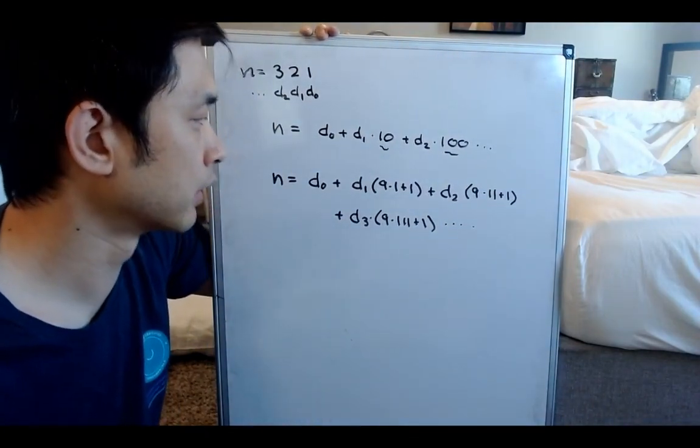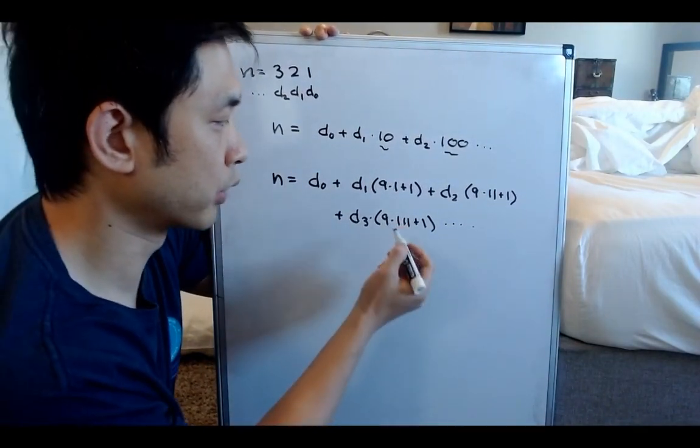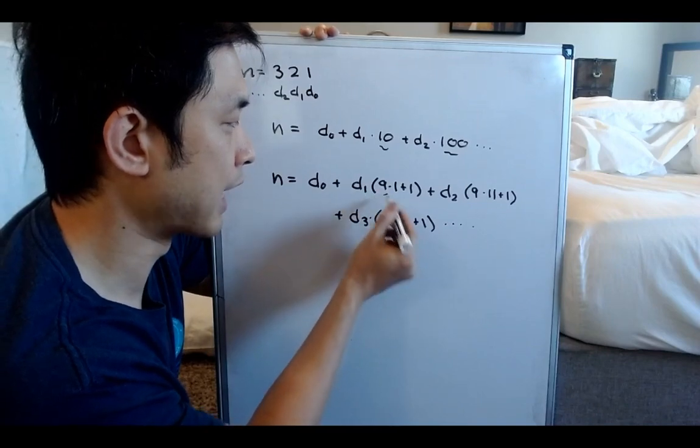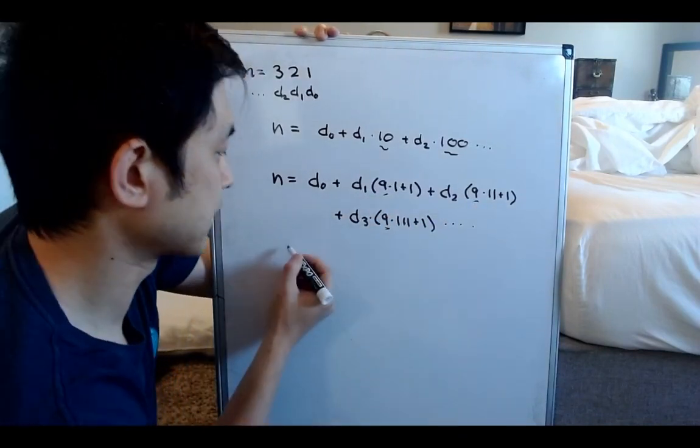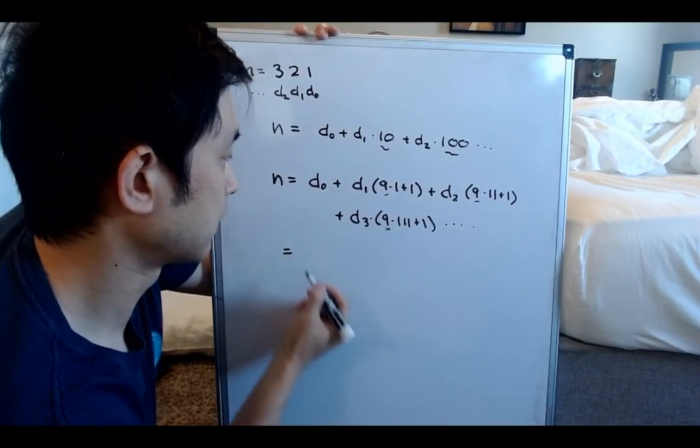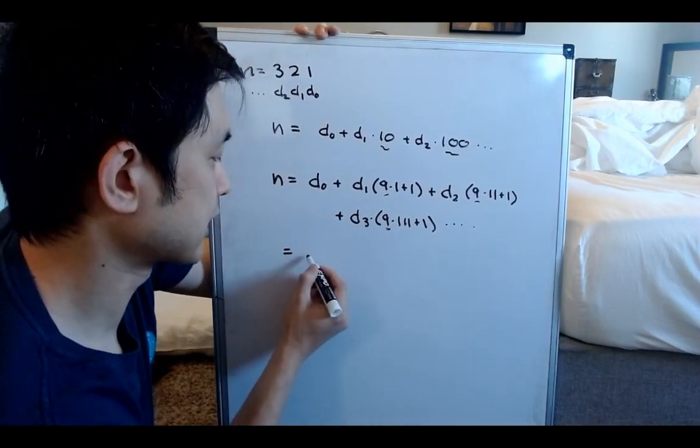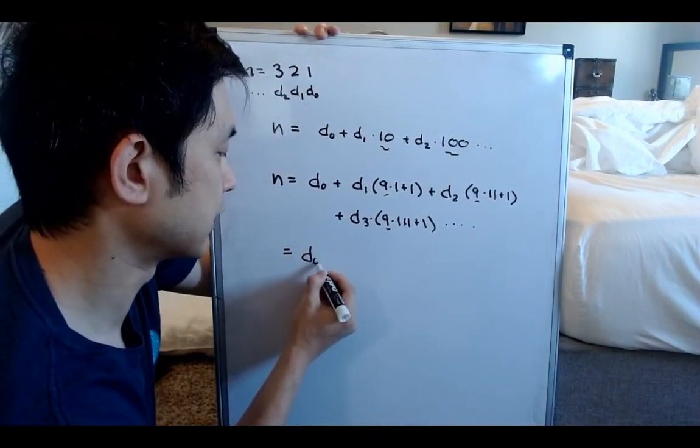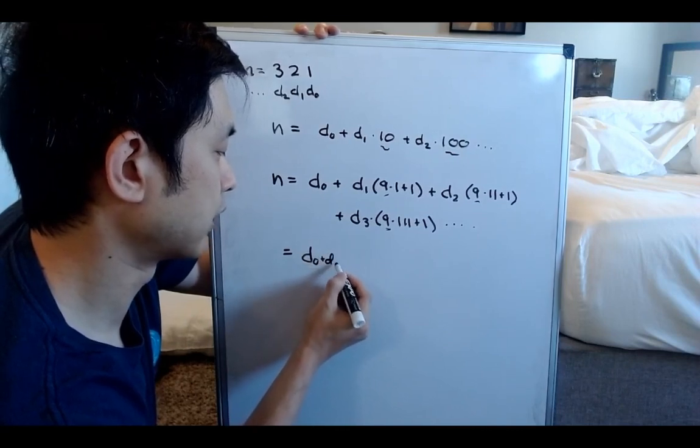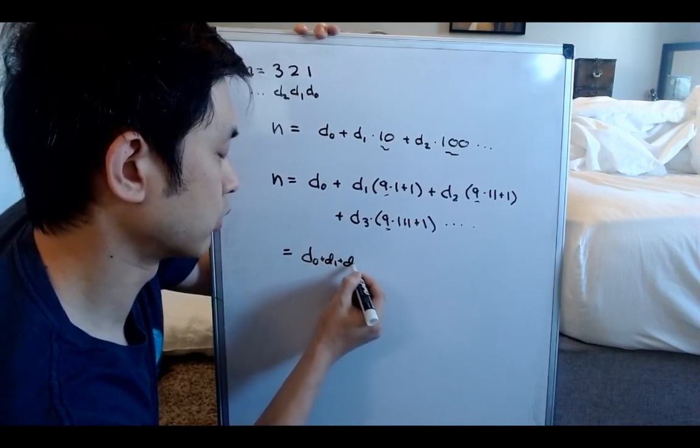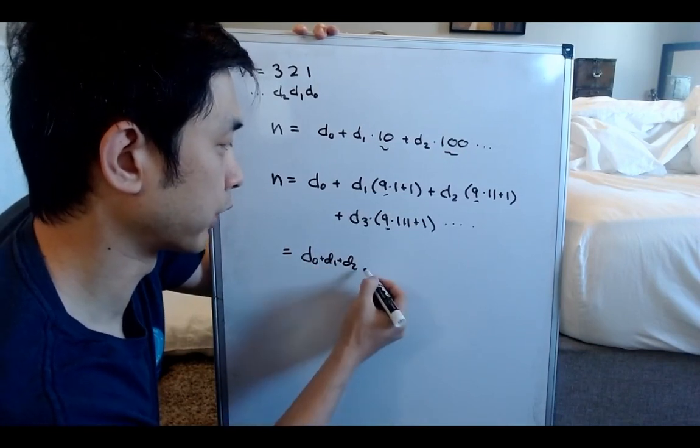So why do this? Well, there's something critical that we could take out here, is the 9. And if we simplify this out, the equation would actually end up looking something like this. It would be like D0 plus D1 plus D2, so on and so forth, which is what we're kind of looking for here,